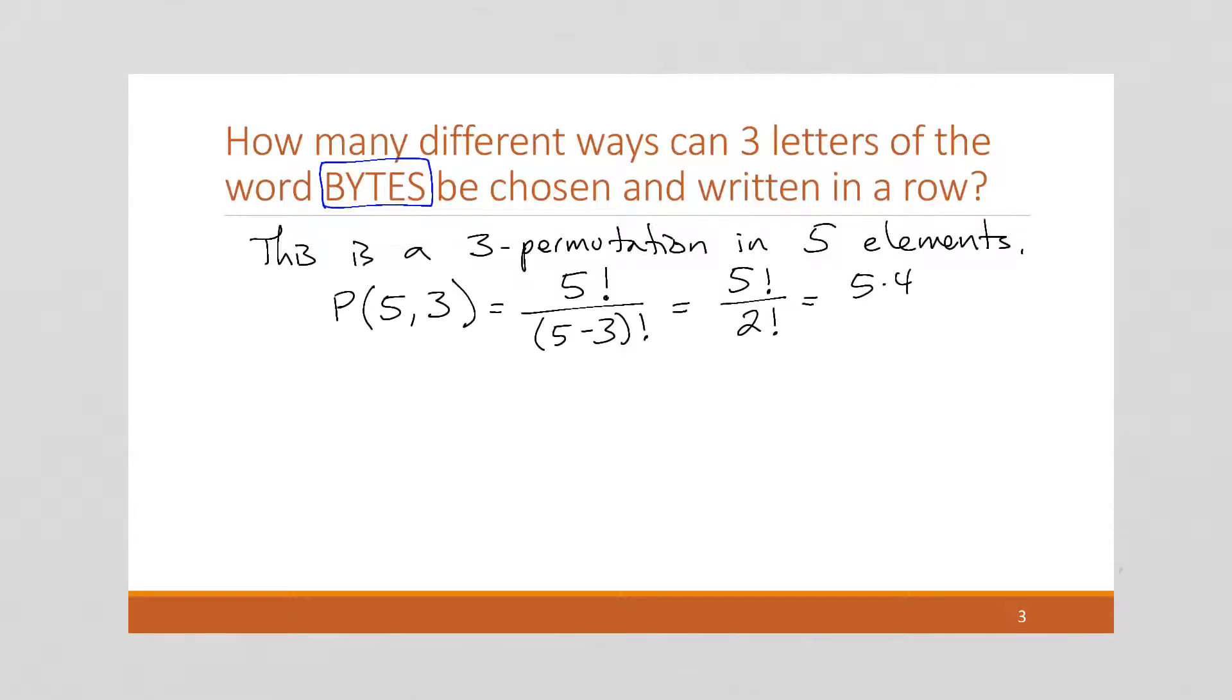So this works out to 5 factorial over 2 factorial, which is 5 times 4 times 3 times 2 times 1 over 2 times 1, just like we did before. Now we're going to get that this is equal to 60.